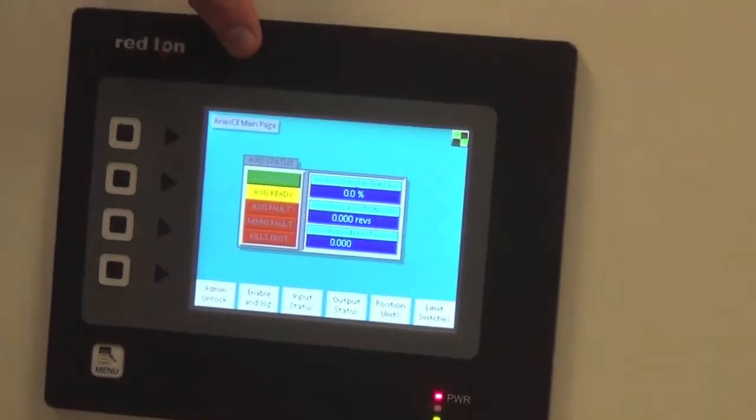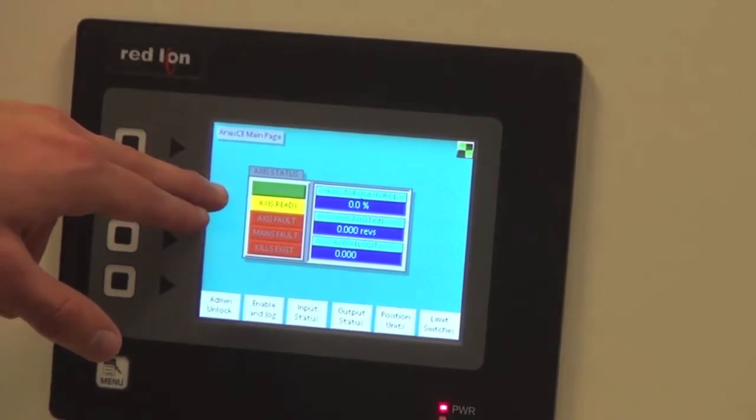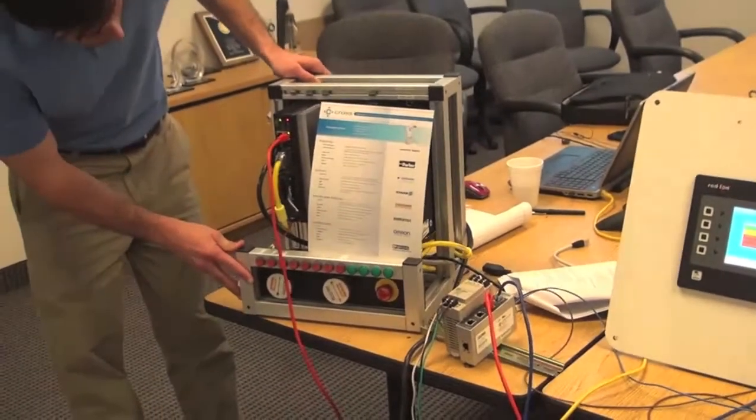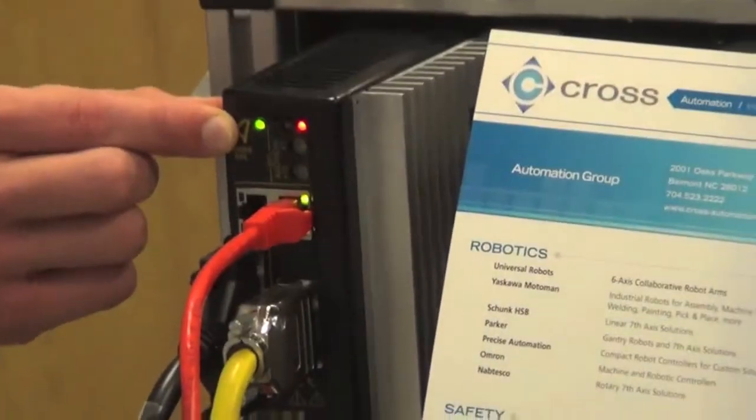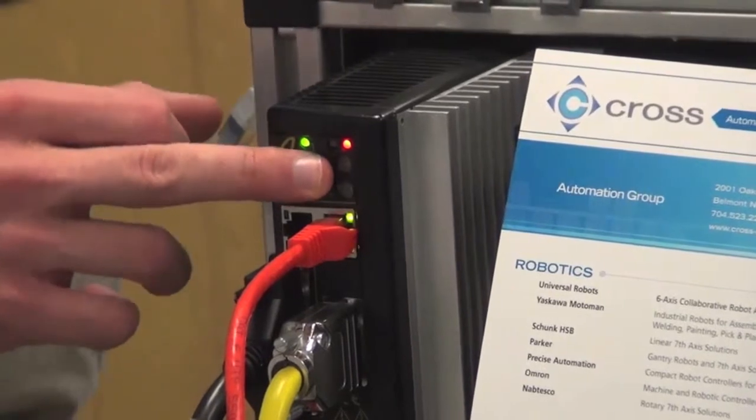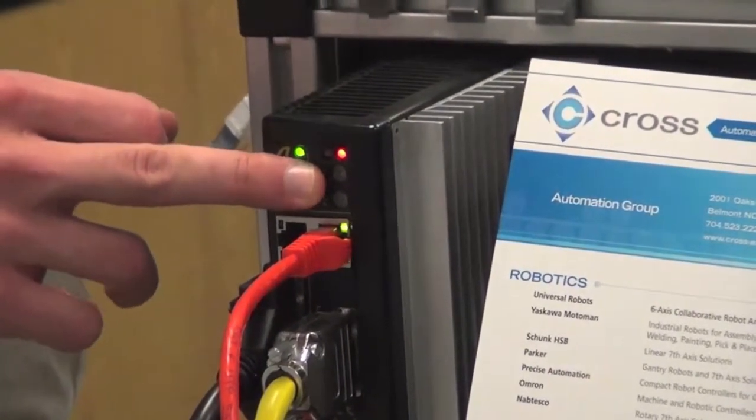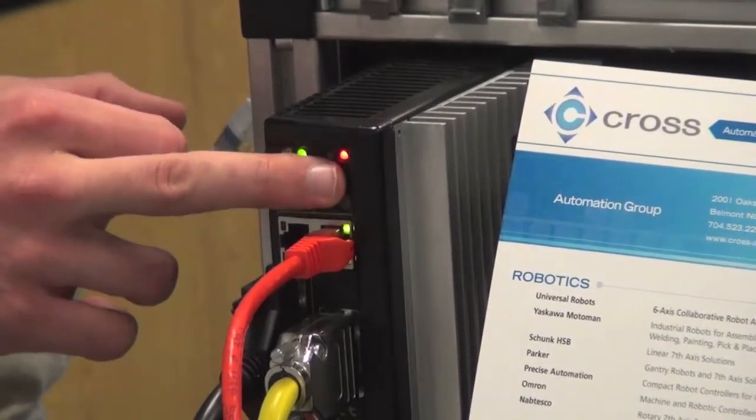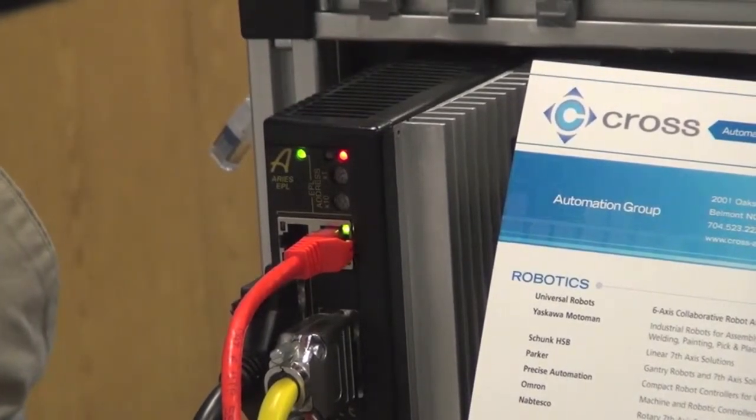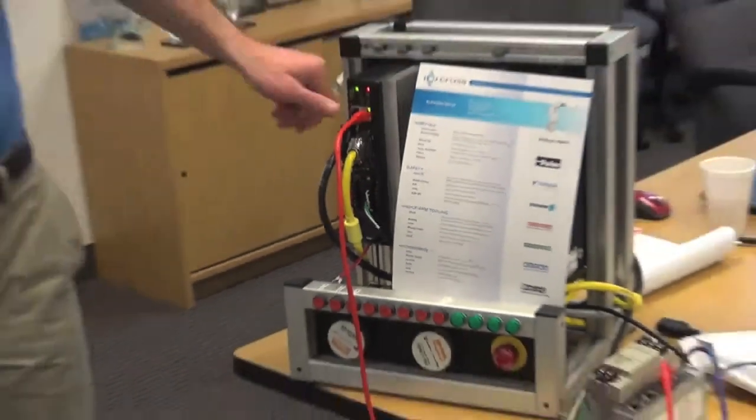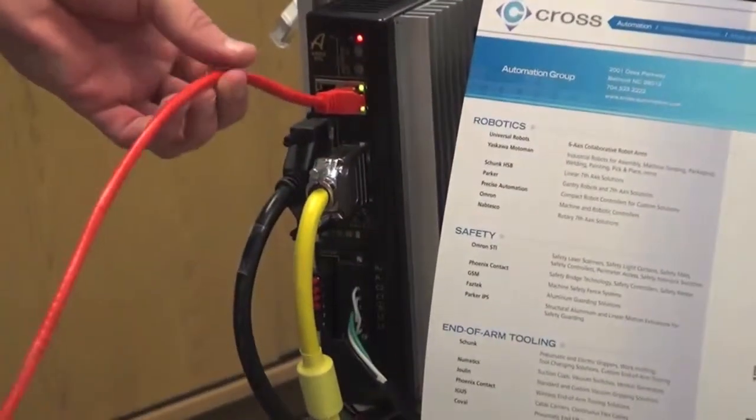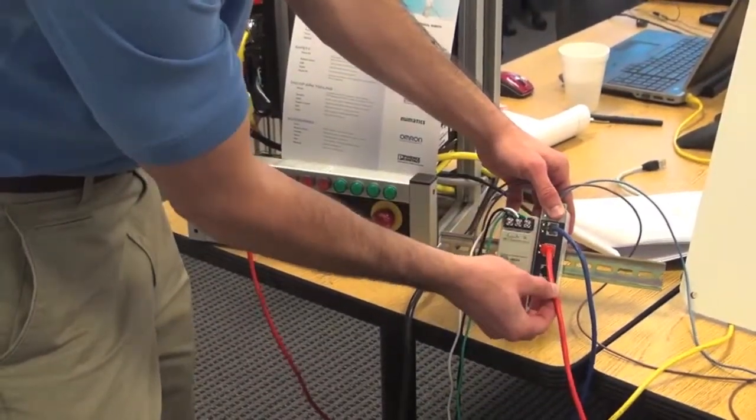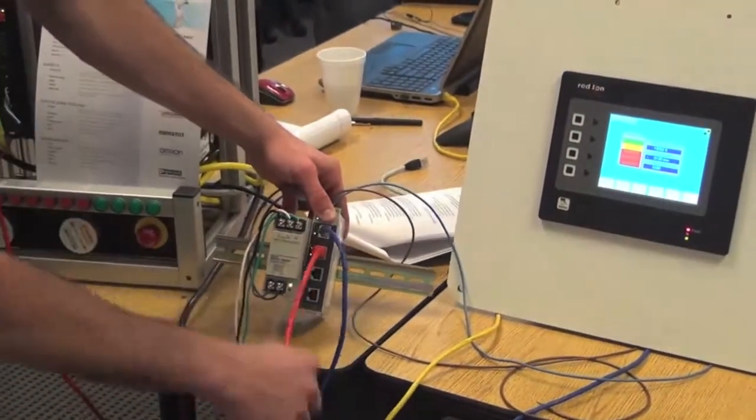Now the main page is up and shows that the axis is ready. If you pan over to the drive we can look at a few lights that are important to note. This light shows that it's getting communications. The middle light shows various faults and problems the drive may encounter - it is off right now. This light shows that the drive is disabled. When enabled it will have power to the servo motor and torque enabled. You can see lights flashing on the ethernet cable and port showing they are indeed communicating and talking back and forth between the red line and the drive.